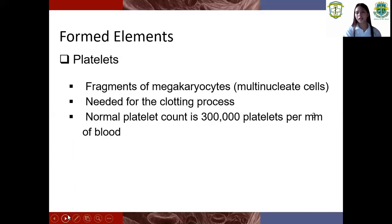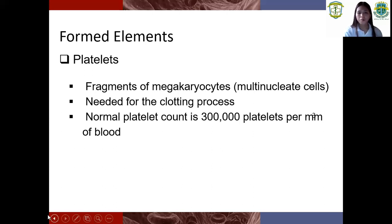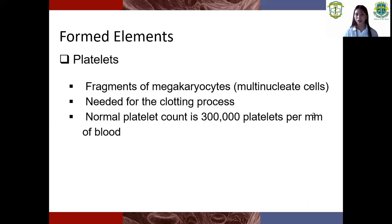So next I will discuss the platelets. So what is platelets? Platelets or thrombocytes are small colorless fragments in our blood. They are fragments of megakaryocytes needed for the clotting process. Normal platelet count is 300,000 platelets per microliter. Platelets are made in the bone marrow, which contains stem cells that develop into red blood cells, white blood cells, and platelets.